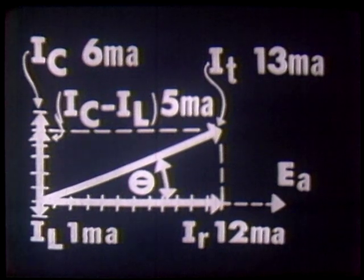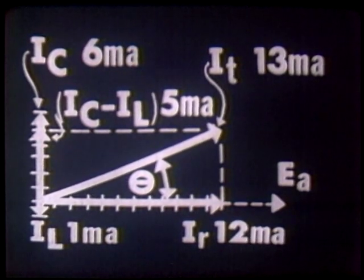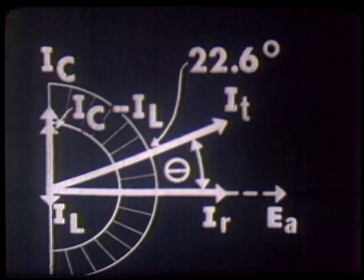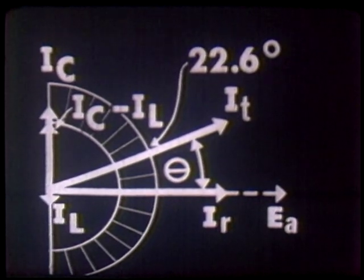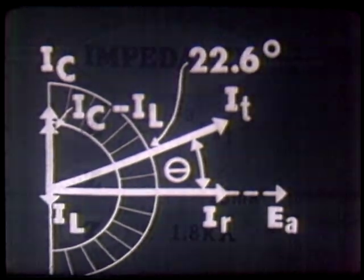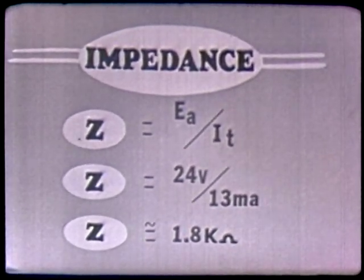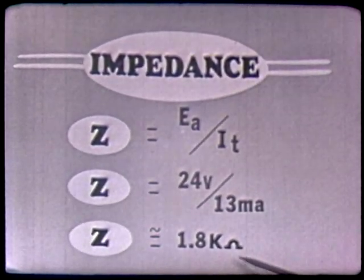We have our phase angle theta generated here. Theta is the angle with which current leads or lags the applied voltage — here it is leading. Measuring this phase angle with a protractor, it reads 22.6 degrees — plus 22.6 degrees because we have a leading phase angle. Now that we have calculated our total current to be 13 milliamperes and the phase angle to be 22.6 degrees, let's find the impedance of our circuit using Ohm's law. The impedance is equal to approximately 1.8K ohms.